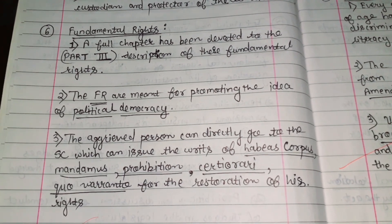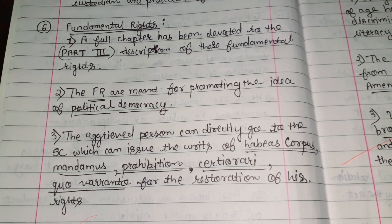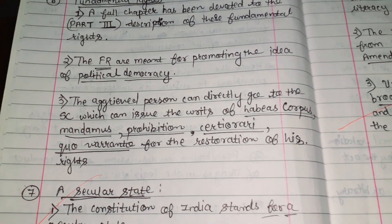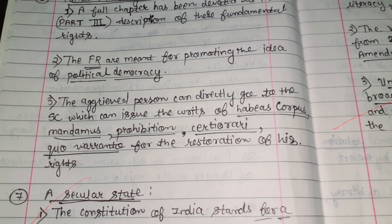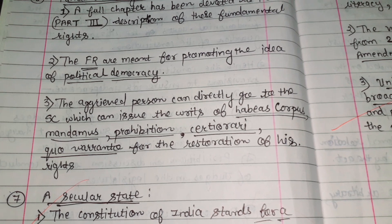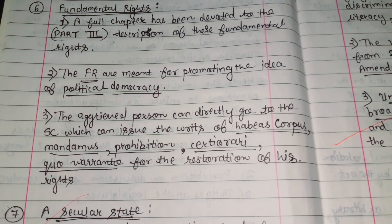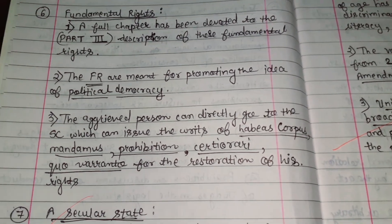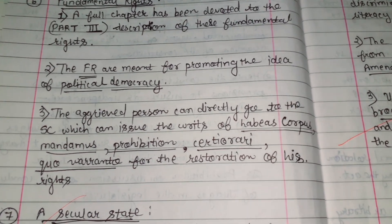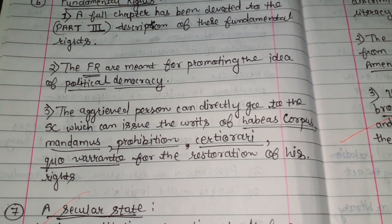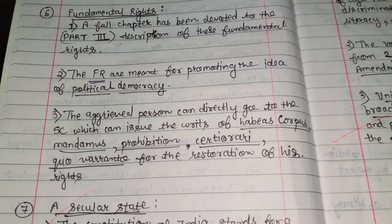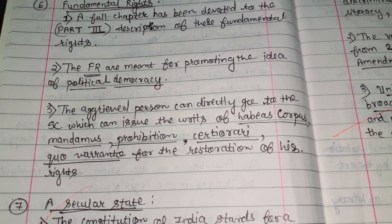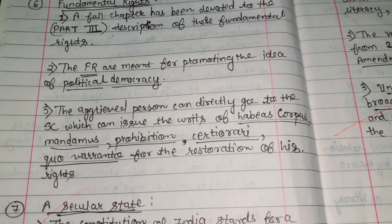The fundamental rights are meant for promoting the idea of political democracy. The aggrieved person can directly go to the Supreme Court, which can issue the five writs: habeas corpus, mandamus, prohibition, certiorari, and quo warranto, for the restoration of his rights.